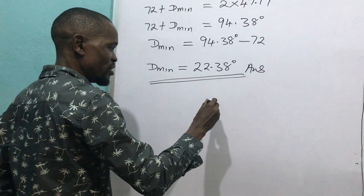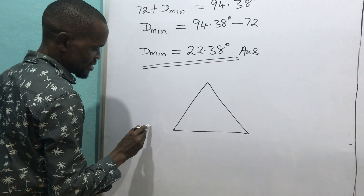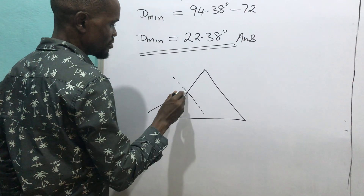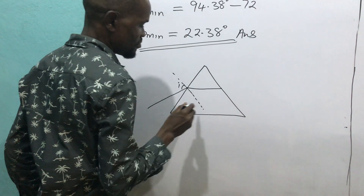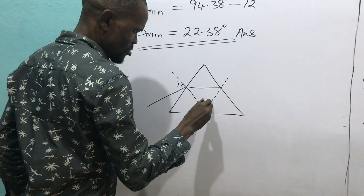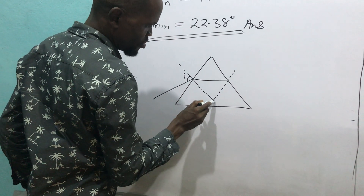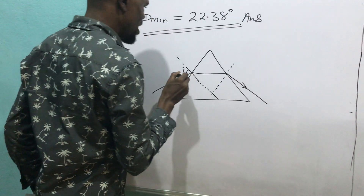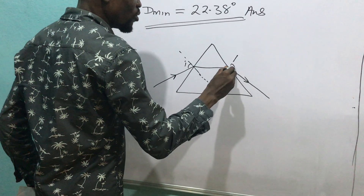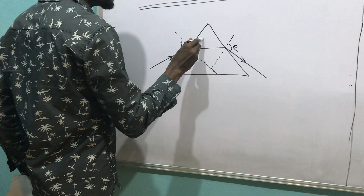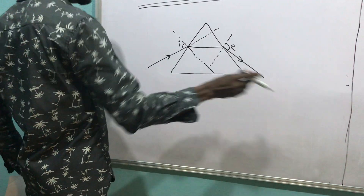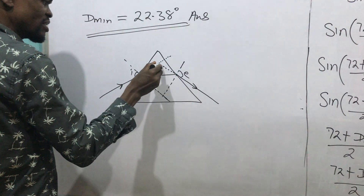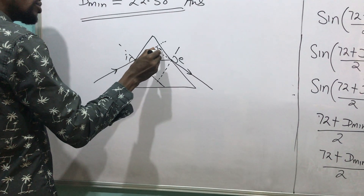A ray is incident on the prism face — this is the normal, this is the incident angle — and it moves through. This is a normal as well. If I draw the geometry, the ray moves this way — it is incident — and this becomes the imagined straight-through angle. So the ray is supposed to be moving this way; instead it deviated, and that deviation angle becomes the minimum deviation.